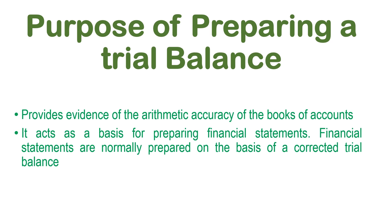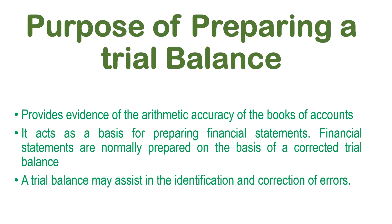The trial balance may also assist in the identification and correction of errors. Sometimes we may list down all the debits and all the credits, and upon adding them, we might find that they are not exactly the same. When the debits and credits are not the same, it means there was an error when posting during the double entry system. The moment we detect that the debits and credits are not the same, this helps us to investigate why they are not the same, and in so doing, we are able to uncover errors.